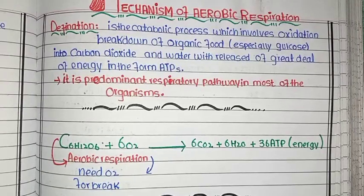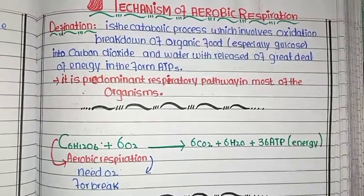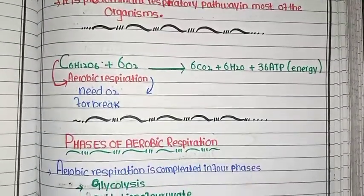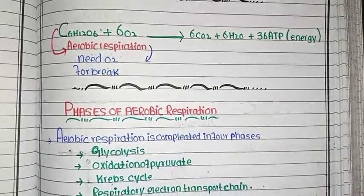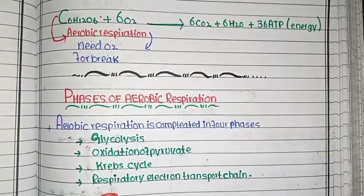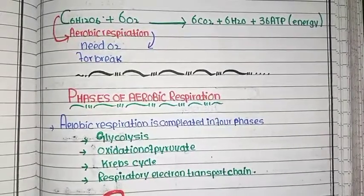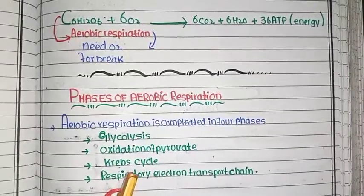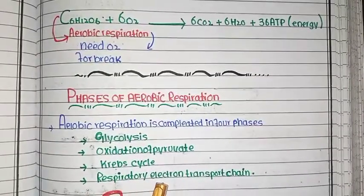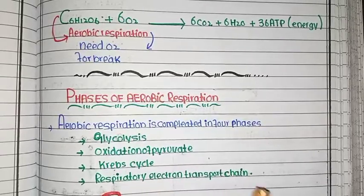Now dear students, let's look at the phases of aerobic respiration. Aerobic respiration is completed in four phases: glycolysis, oxidation of pyruvate, Krebs cycle, and the electron transport chain.